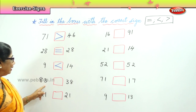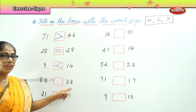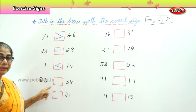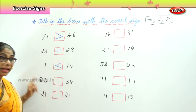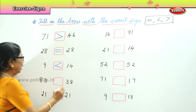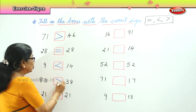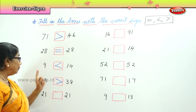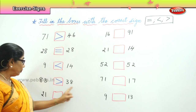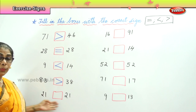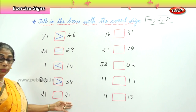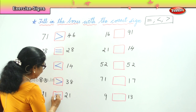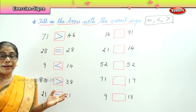And here you have 83 and 38. Which is the bigger of the two? 83. 83 is bigger than 38, and the bird's beak points towards the small number — 83 is greater than 38. Here you have 21 and 21 — 21 is equal to 21.